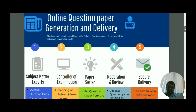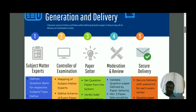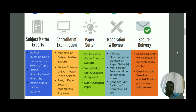These are some of the key entities related to online question paper generation and delivery. I have listed five entities. First is the subject matter expert, who is the person with the ability to define a question bank for the related subject and topic, according to hierarchy level, difficulty level, or name of the subject or topic.